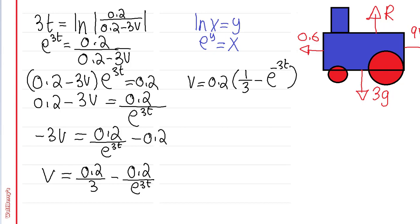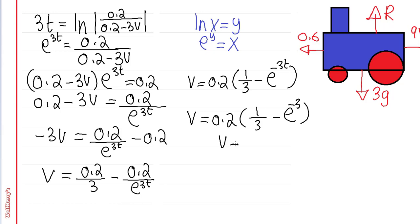Part d says find the velocity when t = 1. We substitute t = 1 into our equation: v = 0.2(1/3 minus e^(minus 3)), and from this we find that the velocity equals 0.05 meters per second.